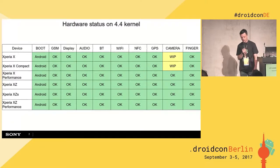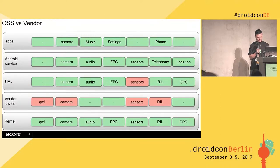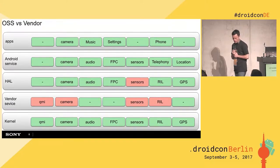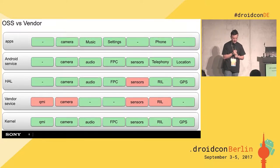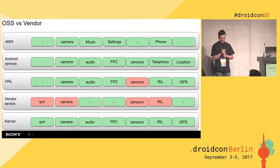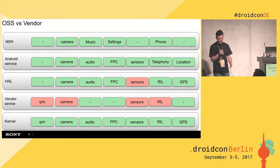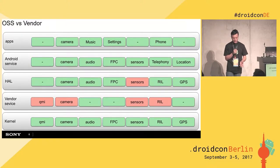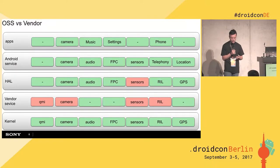This is the current status for the 4.4 kernel, and as you can see, the only non-working feature is the camera. Since things cannot always be open source, some parts of the stack are still proprietary. Here is a vertical view through all layers on one subsystem — the camera still has a closed-source framework, but the kernel driver, application, and services are open source. The same applies to all other subsystems.